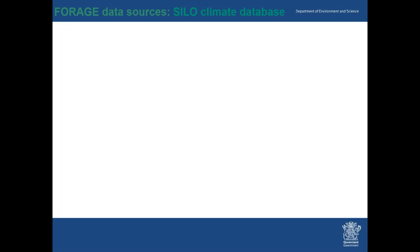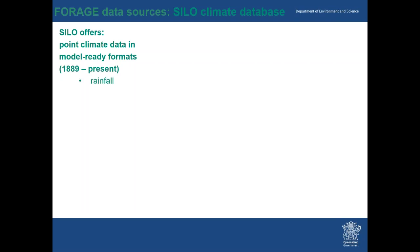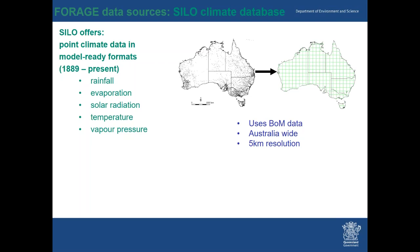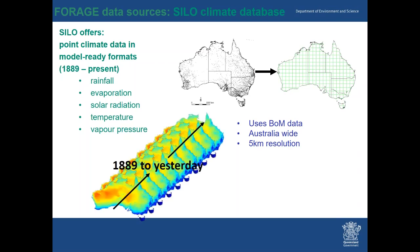Let's start with the data sources. First, climate: the SILO Climate Database. SILO offers point climate data in model-ready formats from 1889 to present, covering rainfall, evaporation, solar radiation, temperature, and pressure — everything needed to drive a pasture growth model. We use BOM data from stations across Australia, interpolated into a five-kilometre grid, with plans to get down to a one-kilometre grid for finer resolution. So essentially we're looking from 1889 to yesterday, right across Australia on a five-kilometre grid.